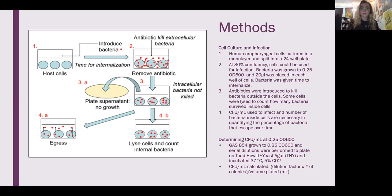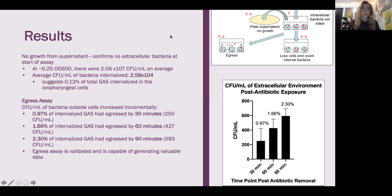By step three, the intracellular bacteria that weren't killed by the antibiotic are now left. For 4B, the cells were lysed and the internal bacteria were counted. For 4A, this is the egress assay. The remaining wells of cells and bacteria were split up into 4A and 4B. The colony forming units for everything were determined, and that is what these numbers are.